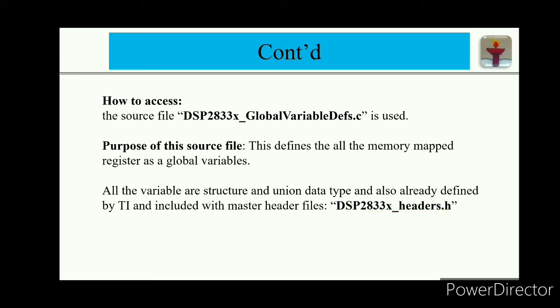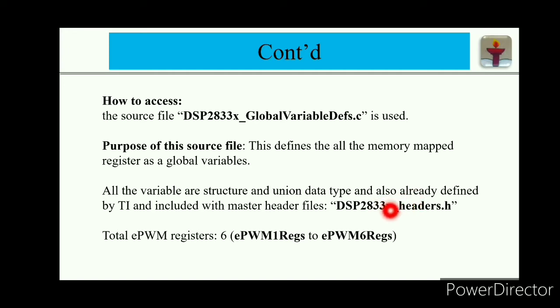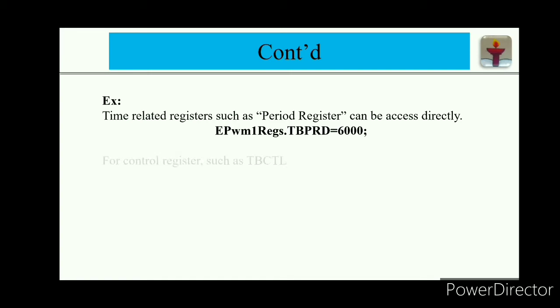For example, if you want to access the EPWM, we have a total of 6 EPWM units: EPWM1 registers through EPWM6 registers. This header file defines the structure of all 6 PWM units, which includes all the registers belonging to each hardware unit. If you want to access the period register and define a period of 6000 counts, you can write: EPWM1register.tbprd = 6000.